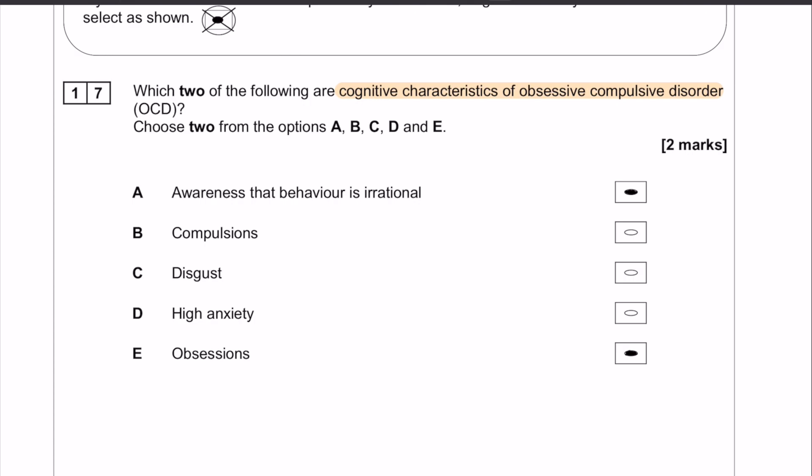We have awareness that the behavior is irrational, that is a very big cognitive characteristic of OCD, and then you have the obsessions as well, which are the intrusive thoughts. Both are cognitive characteristics of OCD and those are the two answers for this question.